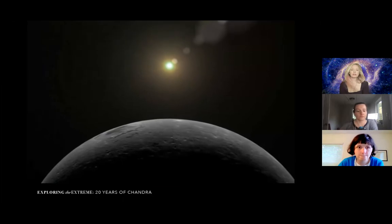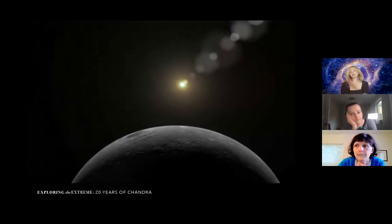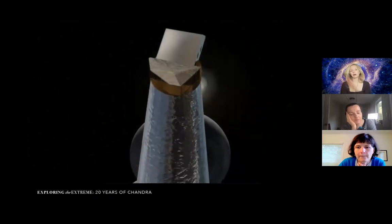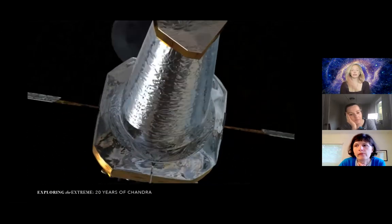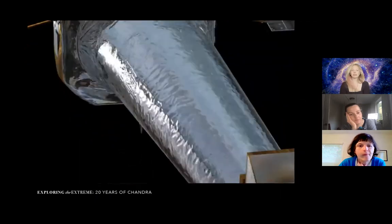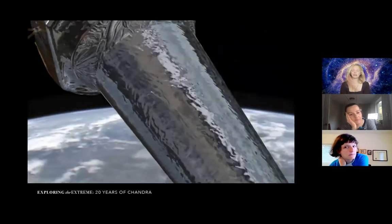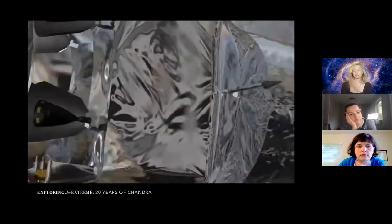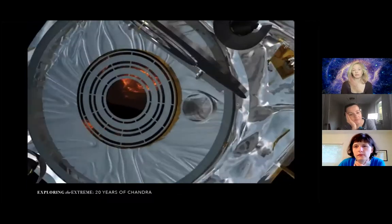Chandra is about the size of a school bus. And because it was so heavy and was so massive, it actually made the launch even trickier. But the astronauts and the ground engineers and all the scientists and everybody involved, they really knew their stuff. They had everything figured out and everything just went beautifully.